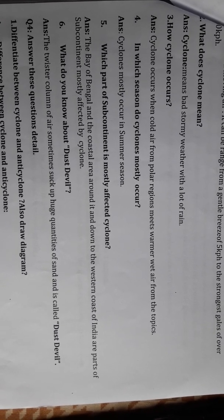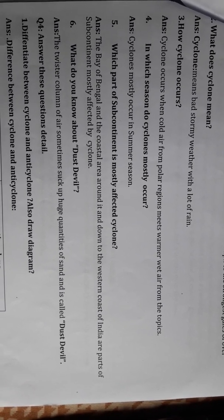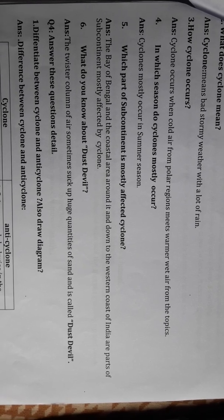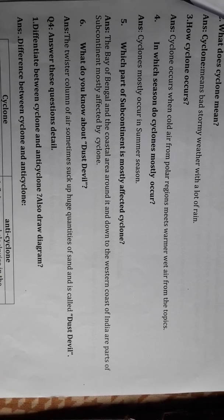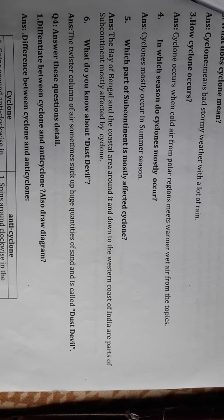What does cyclone mean? Cyclone means bad, stormy weather with a lot of rain. How do cyclones occur? Cyclones occur when cold air from polar regions meets warmer, wet air from the tropics. In which season do cyclones mostly occur? Cyclones mostly occur in the summer season.